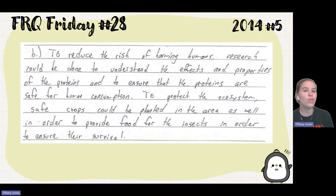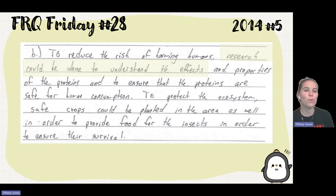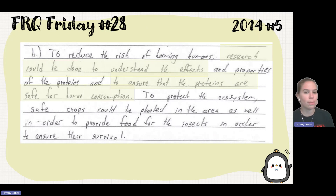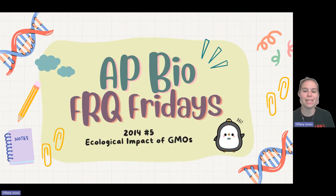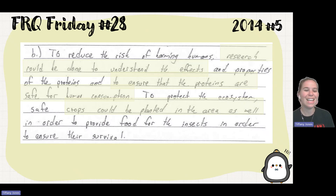To reduce the risk of harming humans, research could be done to understand the effects and properties of the proteins and to ensure the proteins are safe for human consumption. To protect the ecosystem, safe crops could be planted in the area as well to provide food for the insects in order to ensure their survival.